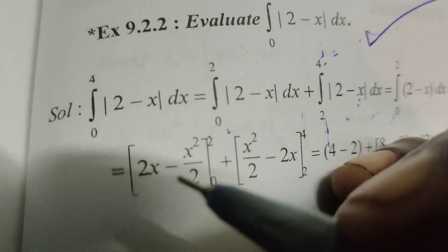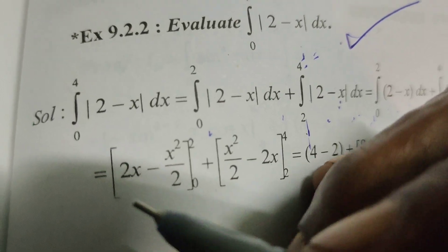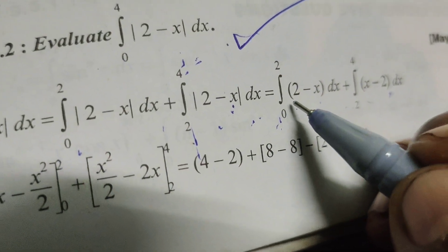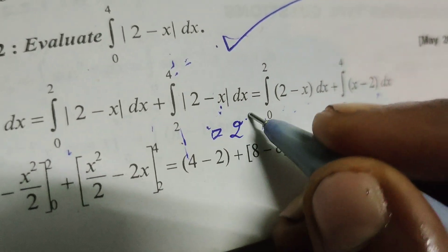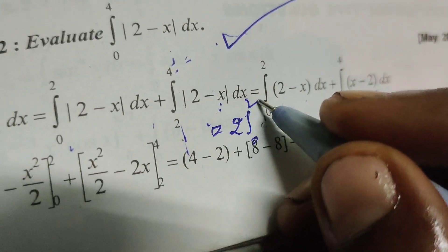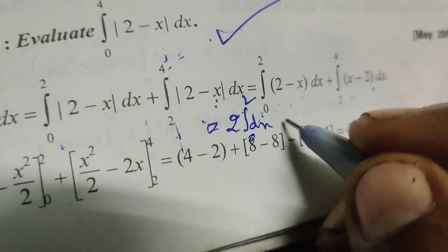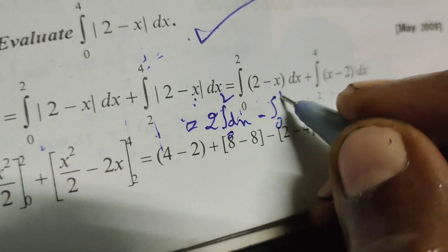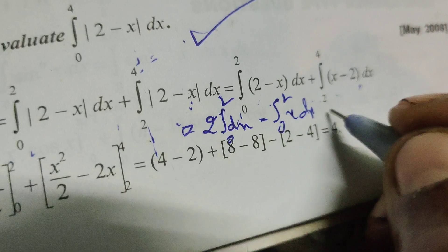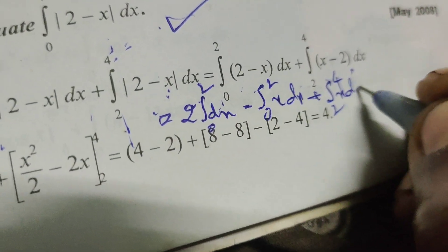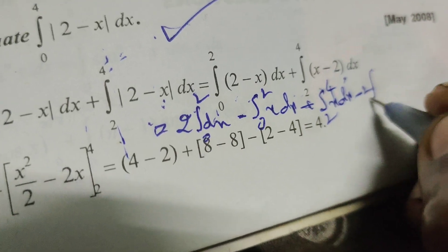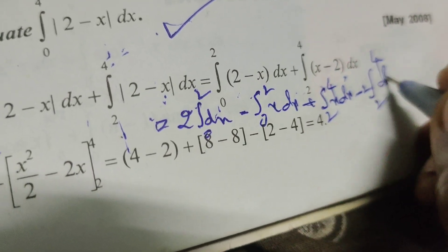We can separate these into individual integrals: 2 integral from 0 to 2 dx minus integral from 0 to 2 of x dx plus integral from 2 to 4 of x dx minus 2 integral from 2 to 4 dx.